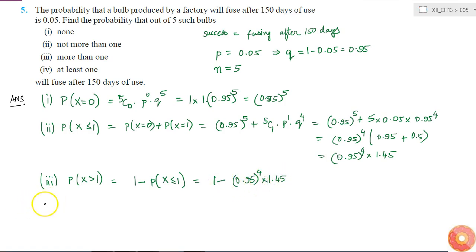And now what is the fourth part? Fourth part is at least one bulb will fuse after 150 days. That means I have to find probability of x greater than or equal to 1. So this is equal to 1 minus probability of x less than 1. So this is equal to 1 minus probability of x equal to 0, because that is the only case which is x less than 1. So this is equal to 1 minus 0.95 to the power of 5. These are my final answers.